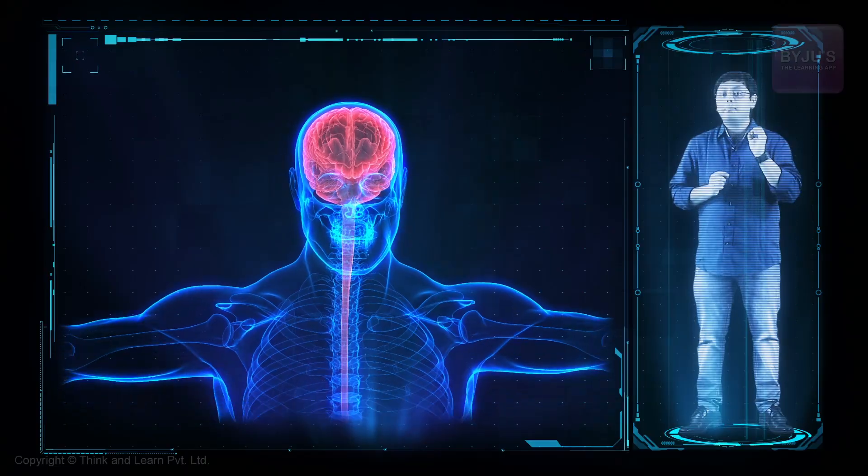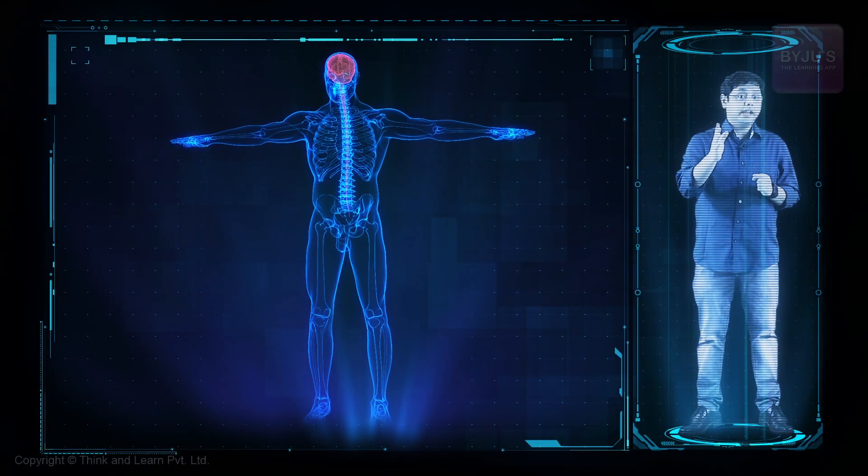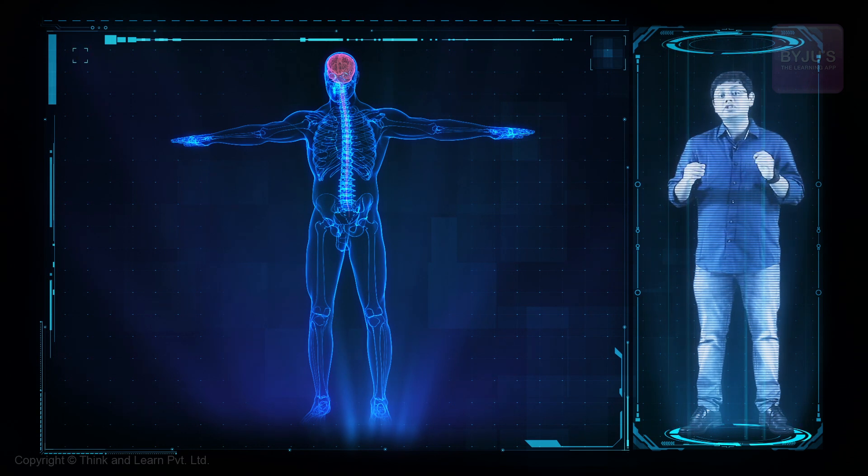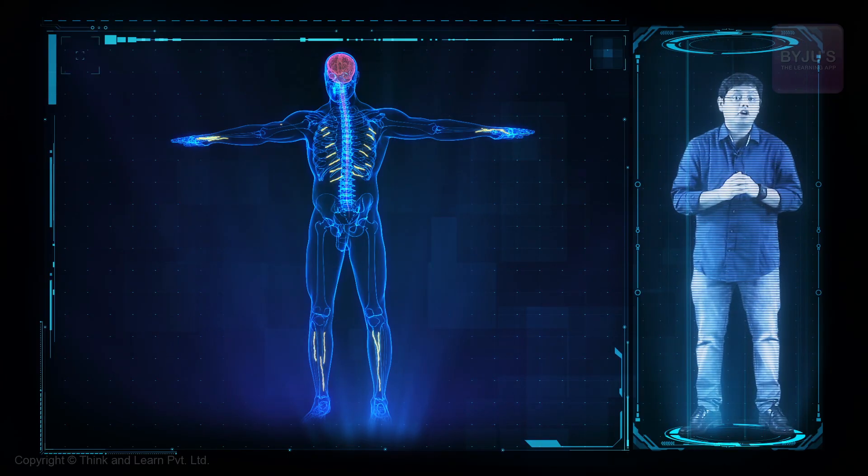Your brain will order your muscles to maintain your posture and balance. At the same time, chemical messengers will carry signals between your nerves and muscles to trigger appropriate muscular contractions.